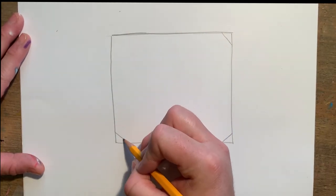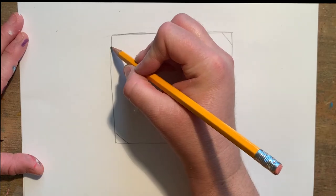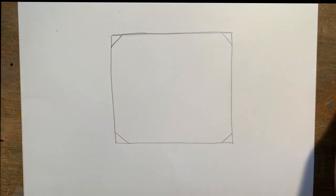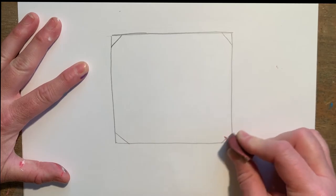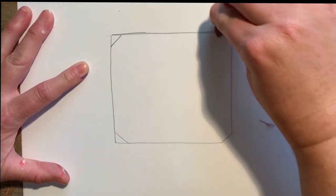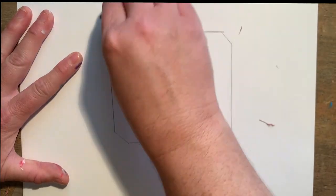Next I'll draw a small diagonal line in each corner. Then I'll erase each of the corners. Now I have rounded corners.